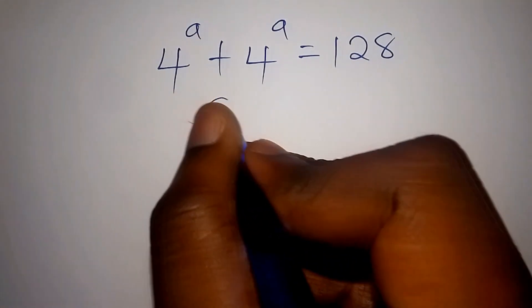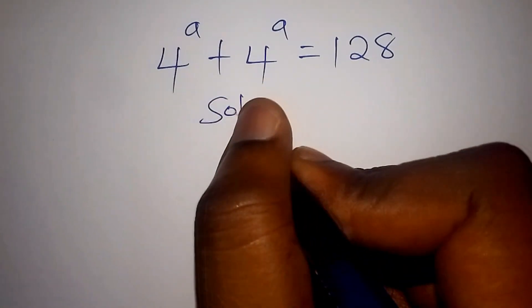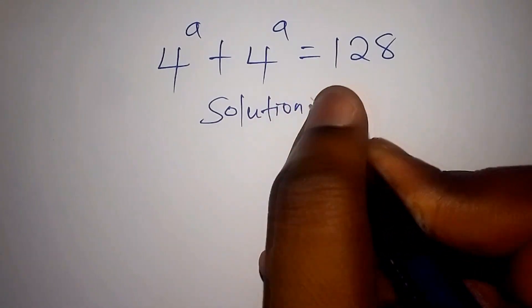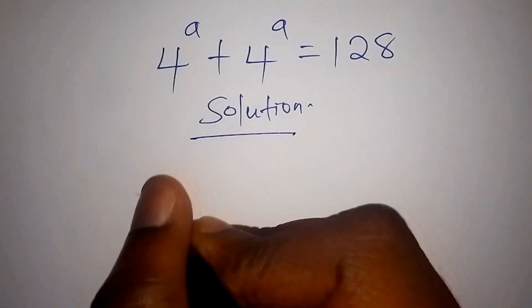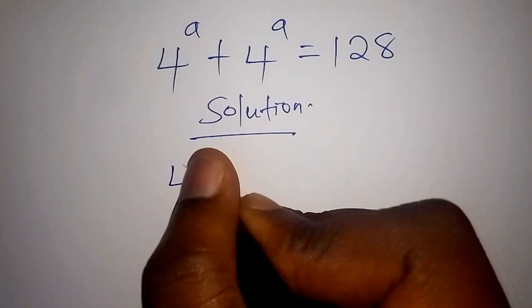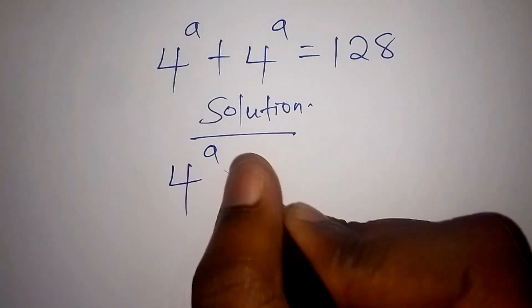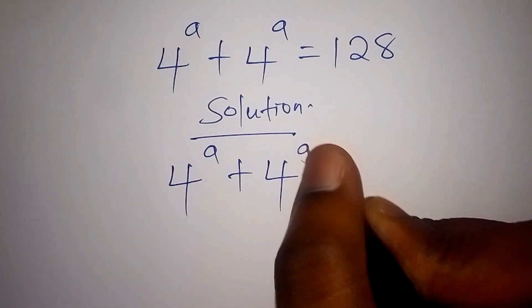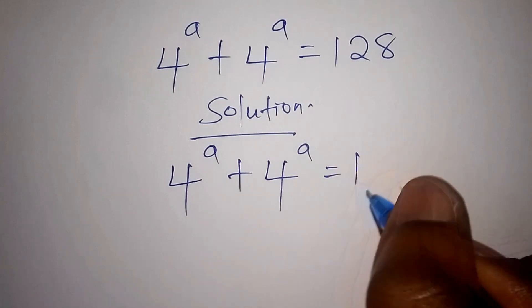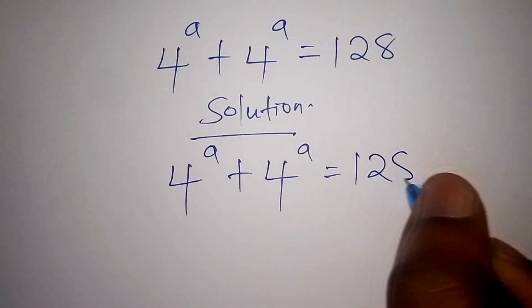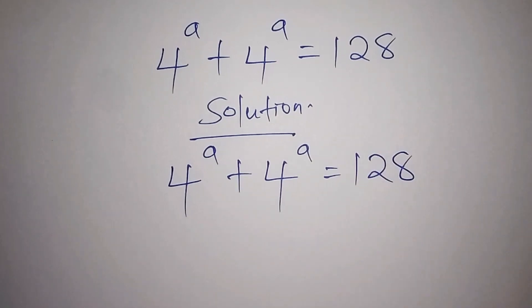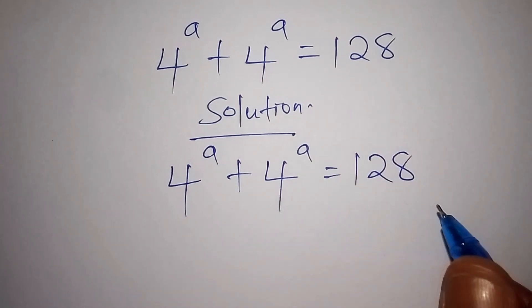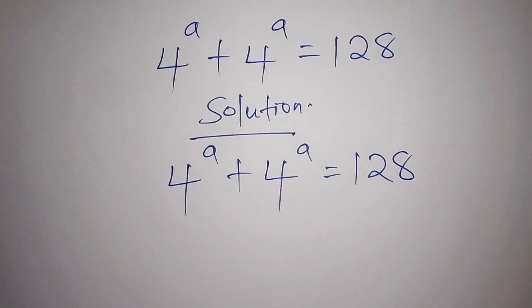The problem we have is: 4 to the power of a, plus 4 to the power of a, is equals to 128. So what is the value of a? This is how we go about it.